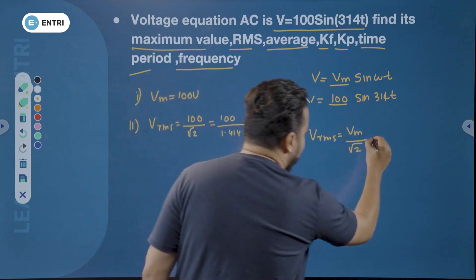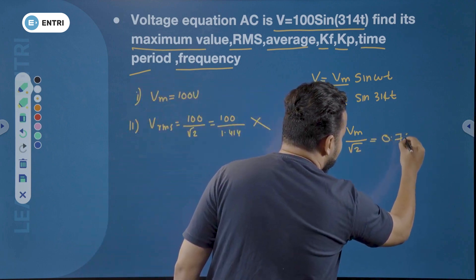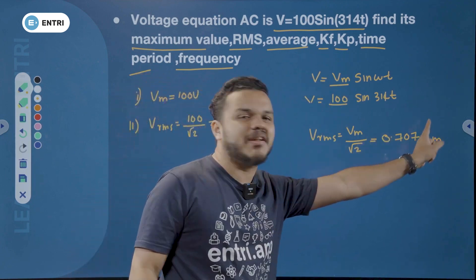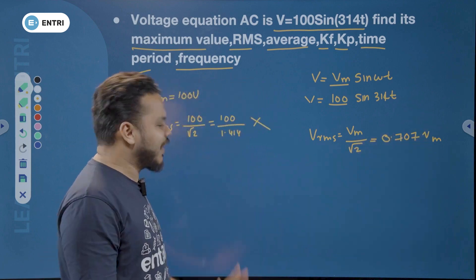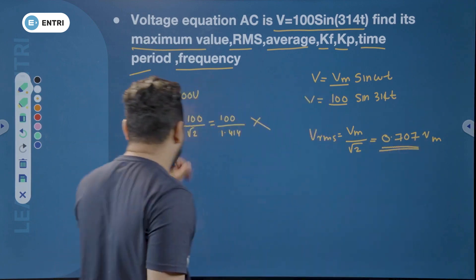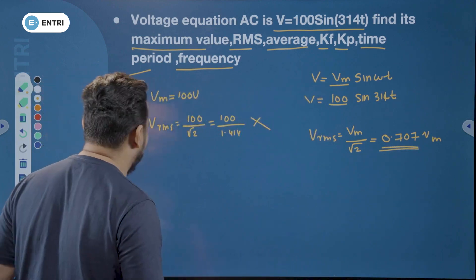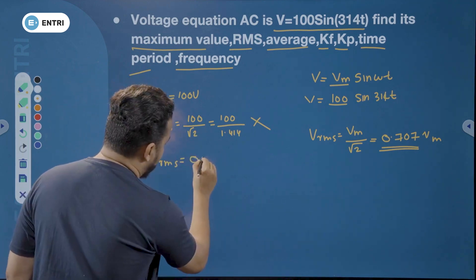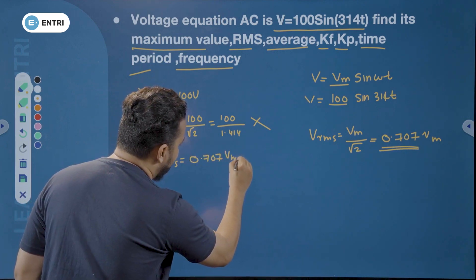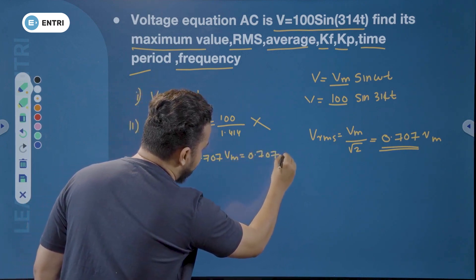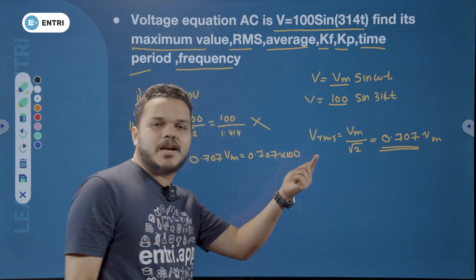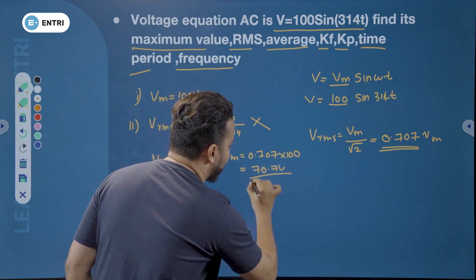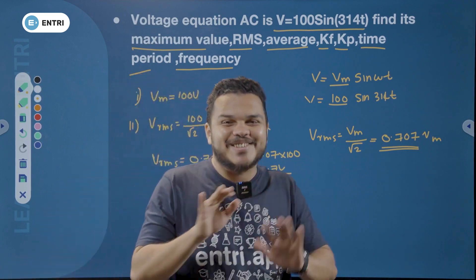1 divided by root 2 equals 0.707. So VRMS is equal to 0.707 × VM. Using the VRMS equation: VRMS = 0.707 × VM, so you will get the answer 70.7 V. This is the second question answer.